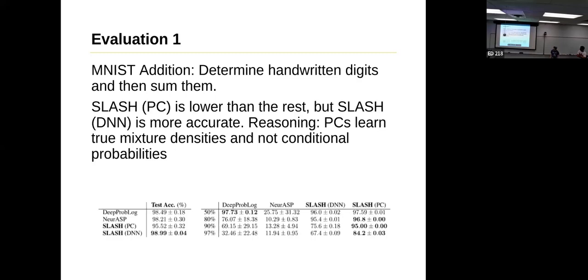So we'll go into Evaluation 1. Evaluation 1 was pretty neat. It's going to be this left chart, which is test accuracies. You'll see that with MNIST-Addition, that's determining handwritten digits and then summing them. SLASH with the probabilistic circuit was lower than the rest. You'll see that right here has a lower accuracy than everything else.